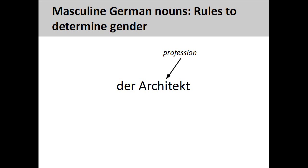As we have seen, nouns designating male beings are masculine. Nouns describing professions, such as 'Architekt' (architect), are masculine. There is a way to form a feminine version of these nouns, which we will explore in a later presentation. Nationalities are also masculine — 'Amerikaner' (American) is a masculine noun. We'll see a way to form a feminine version of these nouns later.